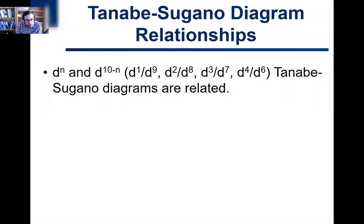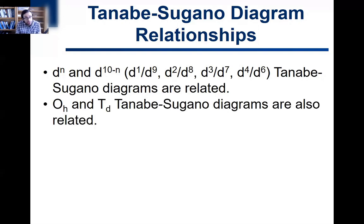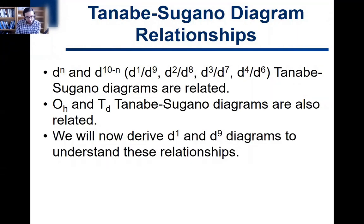One of the last things we have to do in this chapter is talk about some relationships between the Tanabe-Sugano diagrams. The first is that the DN and the D10 minus N diagrams are related — D1 and D9 go together, D2 and D8 have some relationships, etc. The octahedral and tetrahedral Tanabe-Sugano diagrams are also related.